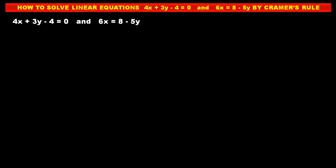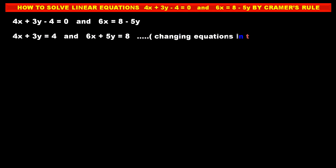If we have to solve these equations by Cramer's rule, then first we have to change each equation into simple form like ax plus by is equal to c — meaning the sum of x terms plus sum of y terms equals a constant term. So, changing this equation into this form, we get 4x plus 3y is equal to 4, by shifting the constant term to the right hand side.